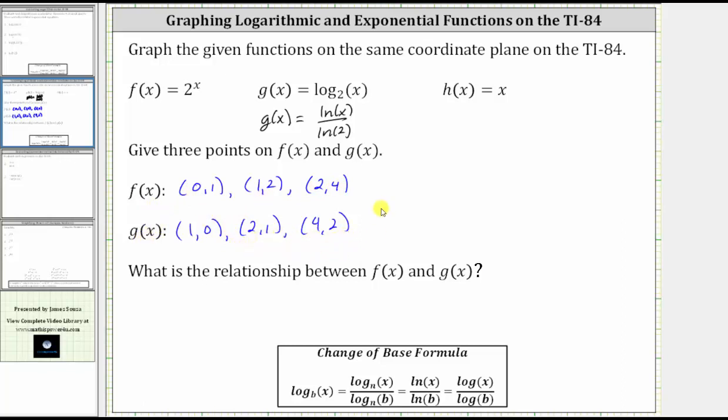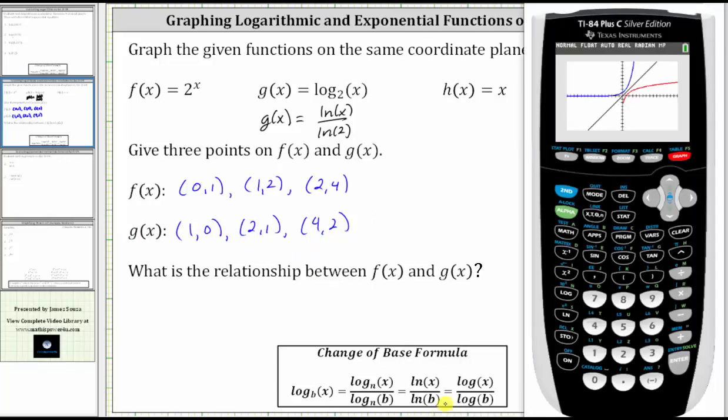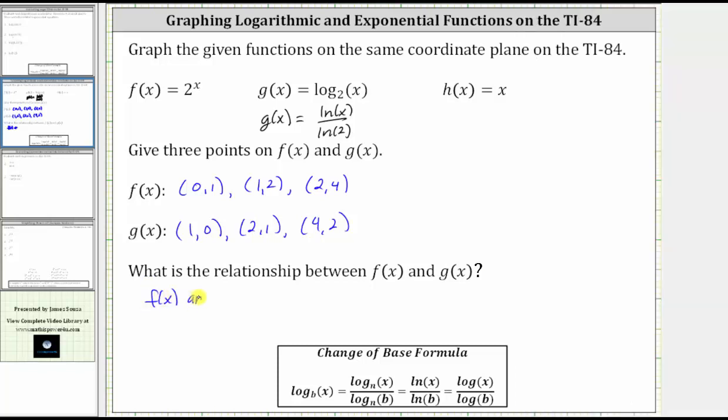Notice how the functions are undoing each other. Noticing this, as well as graphically, the two functions are symmetrical across the line y equals x, we should be able to draw the conclusion that f(x) and g(x) are inverse functions. I hope you found this helpful.